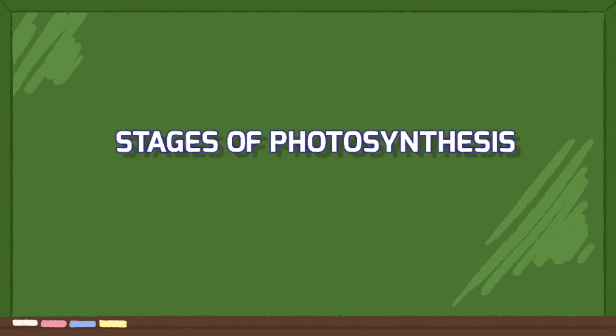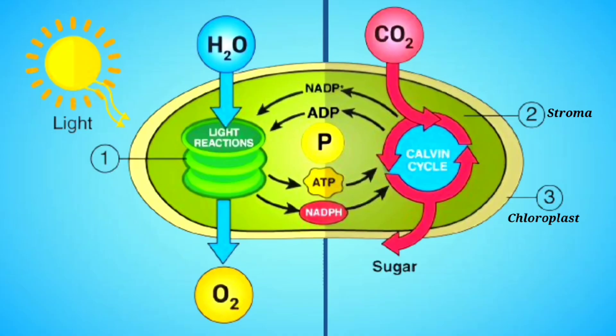Photosynthesis happens in two main stages: the light reaction and the dark reaction. Let's break these down, starting with the light reaction.